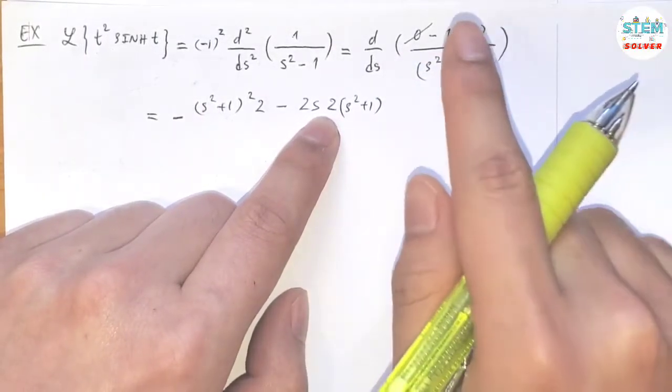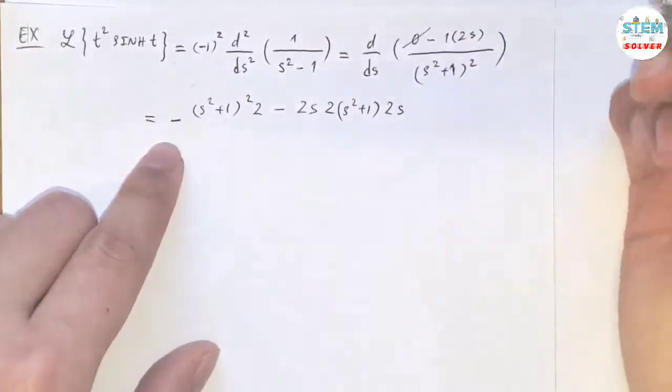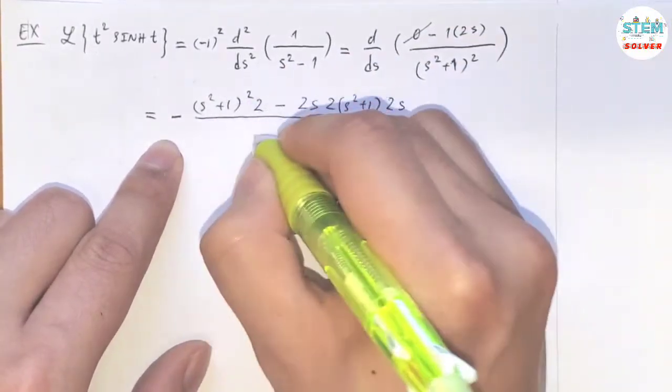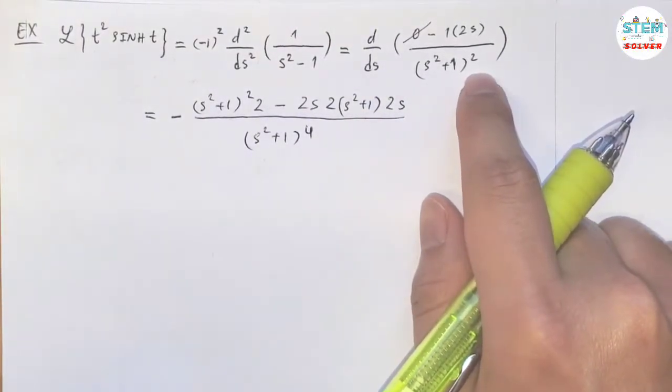And then you have to apply the chain rule, take the derivative inside. Now all of this over s squared plus 1 to the fourth. We have squared of whatever the bottom is.